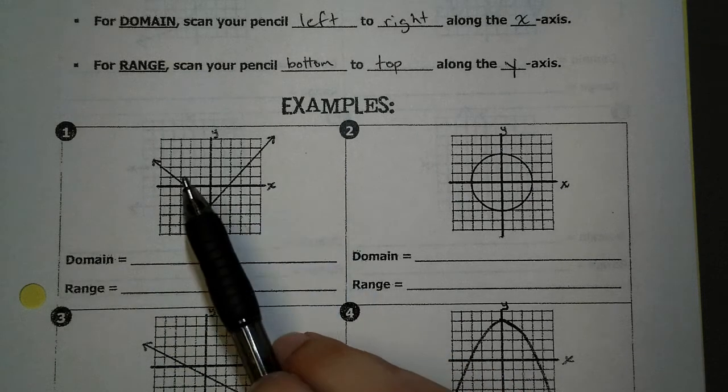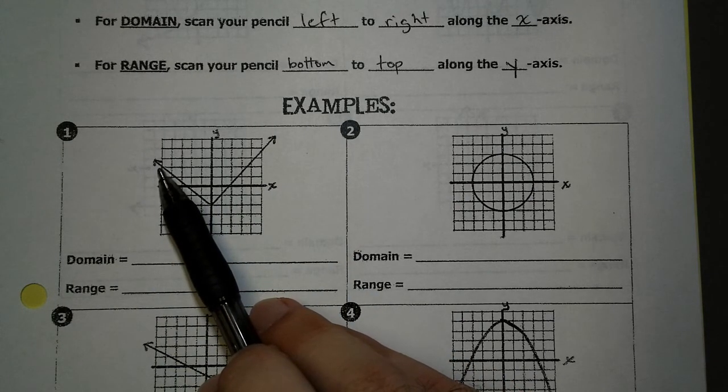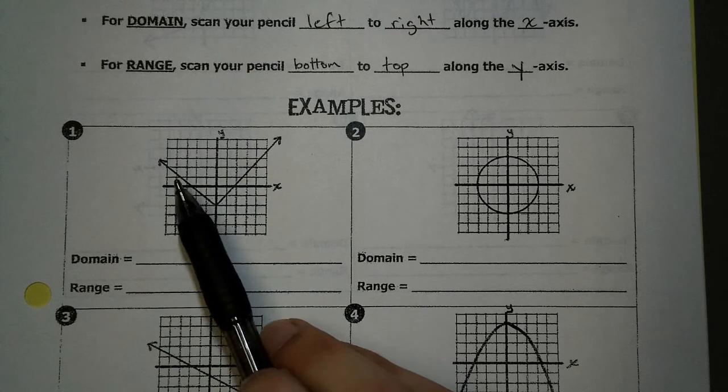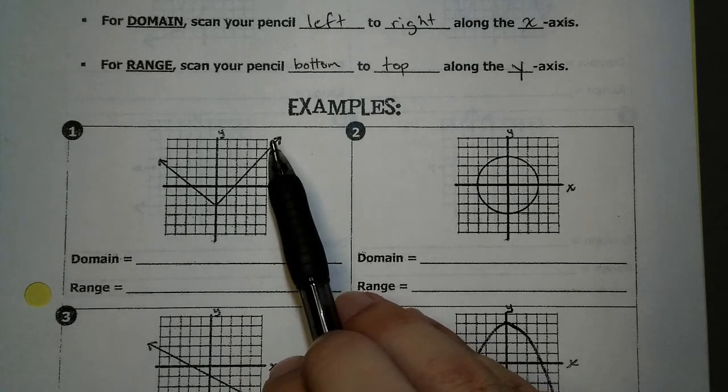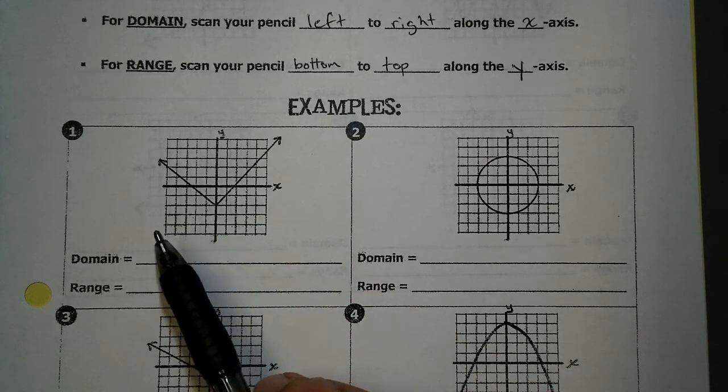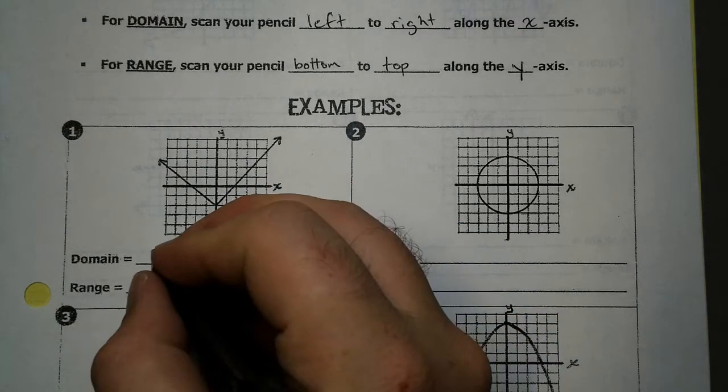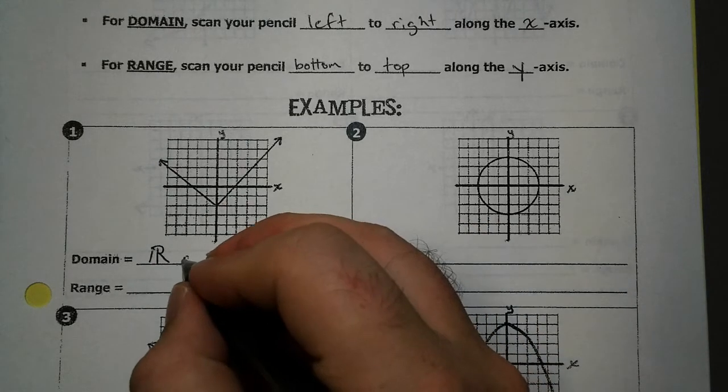If I look at the left side, I've got this arrow. Remember when you see an arrow, that means it continues, there's no break, so it goes to like negative infinity. Scanning to the right, I have an arrow on the right side. So whenever something goes from negative infinity to positive infinity, we use this symbol which means all real numbers.